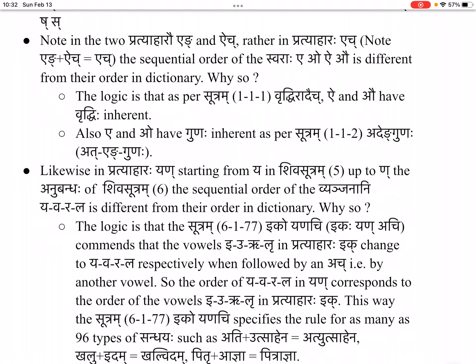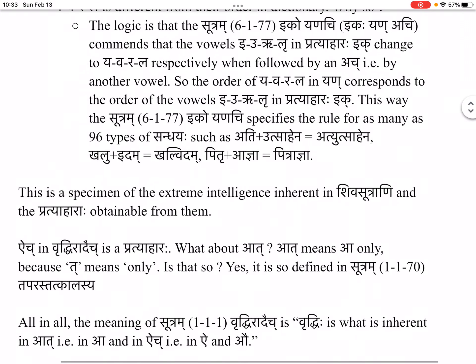So, the order of ya-va-ra-la in 'yan' corresponds to the order of the vowels i, u, ṛ, ḷ in pratyahāra 'ik'. This way, sutra 6.1.77 iko yan-aci specifies the rule for as many as 96 types of sandhi — such as: ati + utcāhena = aty-utcāhena; khalu + idam = khalv-idam; pitṛ + ādhyā = pitrādhyā. This is a specimen of the extreme intelligence inherent in Shivasūtrāni and the pratyahārāha obtainable from them — that the rule for 96 types of sandhi is summarized in just two words: iko yan-aci.